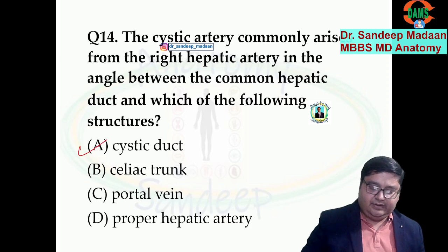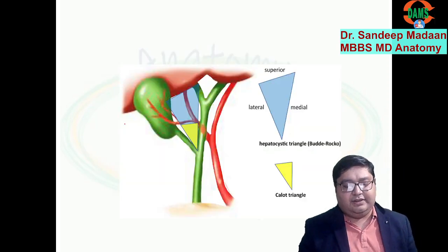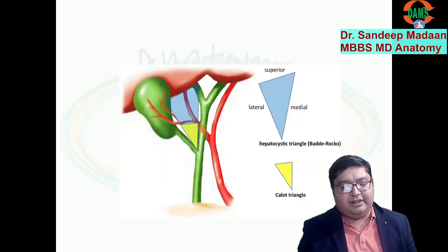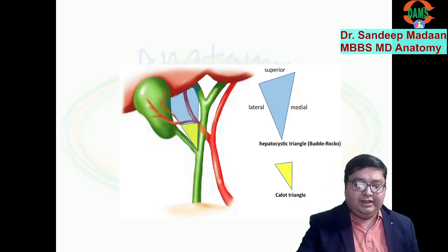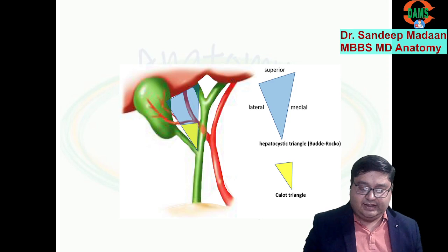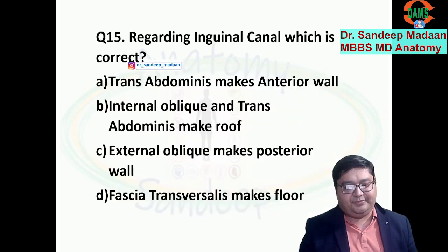This is where we get the triangle — between the common hepatic duct and the cystic duct, we have the artery present. This is Calot's triangle, also known as the hepatocystic triangle.